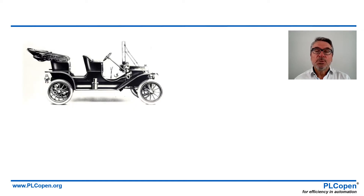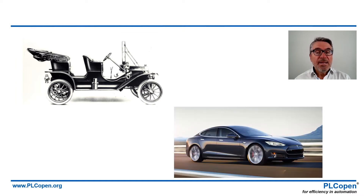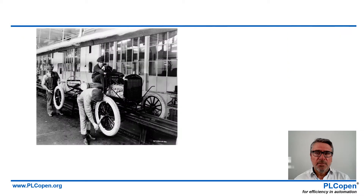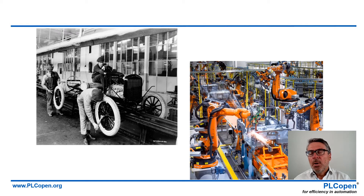This is the first mass-produced car, the Ford Model T. Nowadays a mass-model car looks like this — there is a huge difference. And if you look at the production lines of these cars, you see that originally with the T-Ford, there was much manual labor involved.